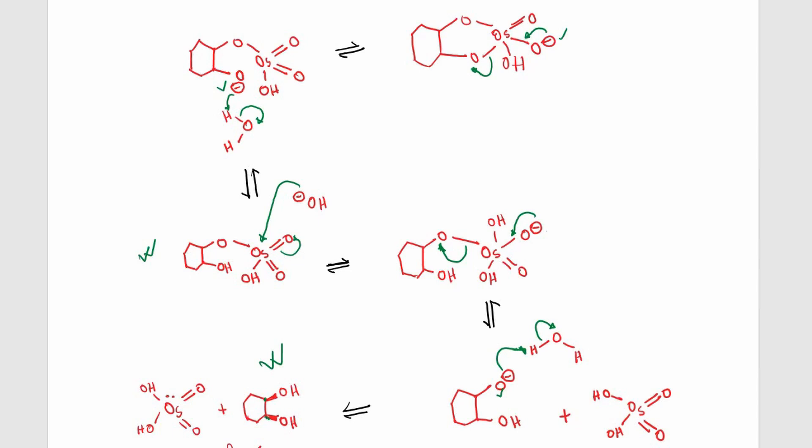As both oxygen atoms are coming from a single osmium tetroxide molecule, they are normally adding from the same side. So this is a syn addition. Also, we are forming a reduced form of osmium here, because in osmium tetroxide the oxidation number of osmium is +8, but in this particular intermediate the oxidation number of osmium is +6.